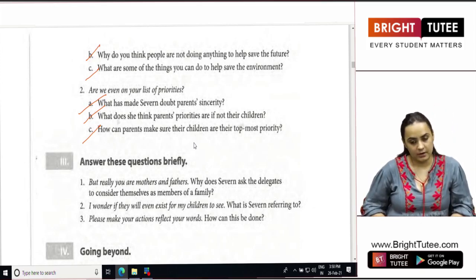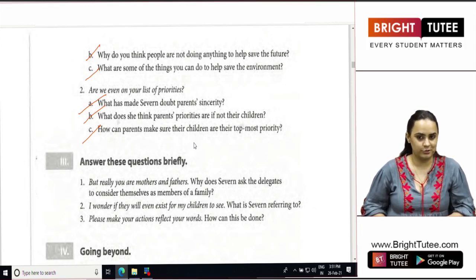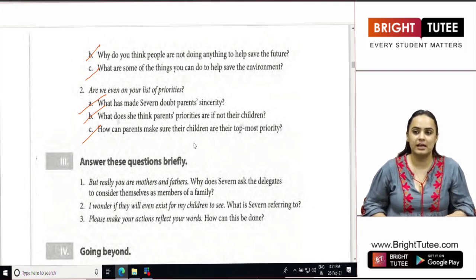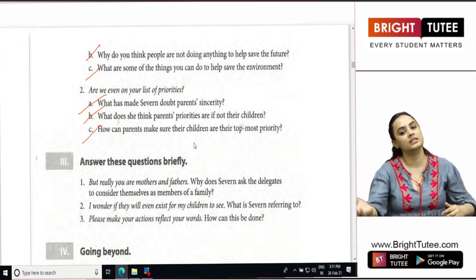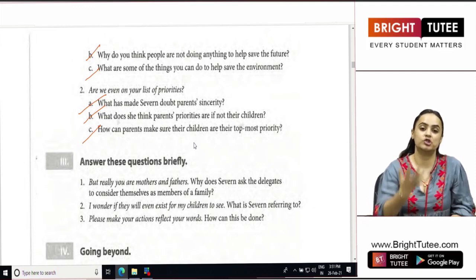But really, you are mothers and fathers. Why does Severn ask the delegates to consider themselves as members of a family? Remember, I told this to you. She pointed out that these delegates were a part of one big family and that the entire population of the world is one family because she wanted to convey to them that one's actions will have an impact on the other person's lives. So if we want to do something for the whole world, we will have to make a change in ourselves.